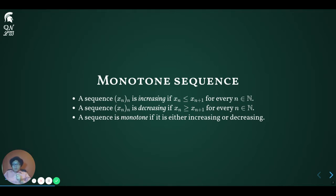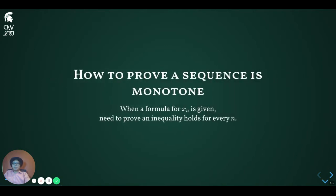Very importantly, a monotone sequence cannot switch from increasing between some terms to decreasing between some other terms. Just to make sure we are all on the same page, let's do some examples proving that a sequence is monotone. To prove a sequence is monotone, generally we need to do some sort of manipulation of inequalities.